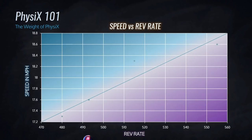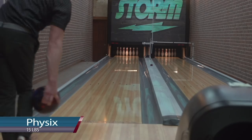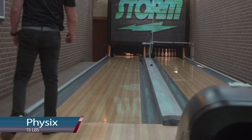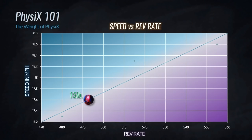Looking at the next graph, at 15 pounds my ball speed matches my rev rate — I'm not locked into a certain category of core, surface, or layout, so I can use pretty much any ball with any layout and get good results. My speed was 17.6 miles per hour and about 490 revs. When I went up to 16 pounds, my speed dropped half a mile an hour and my revs dropped to about 480 — enough to bump me into the rev dominant category with the slower ball speed.